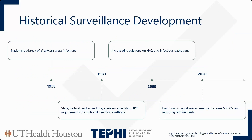To understand why we conduct surveillance, it helps to look at historical surveillance development in the United States. The first important event was in 1958, when there was a national outbreak of streptococcus infections in American acute hospital settings. That led to the development of healthcare-acquired infection definitions that we still use today.